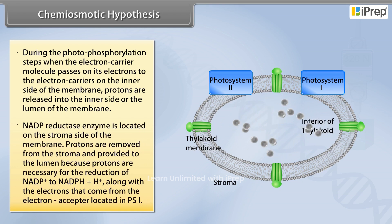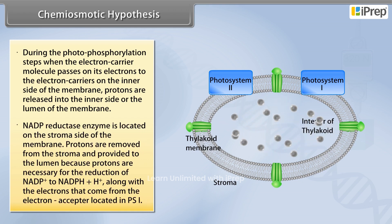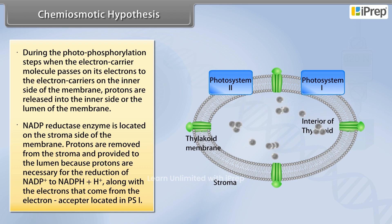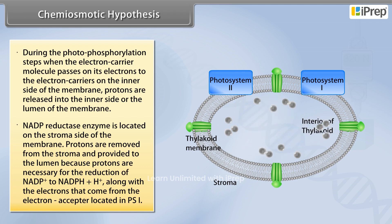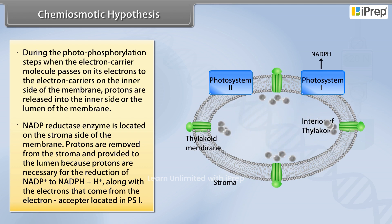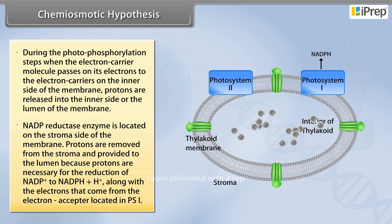NADP reductase enzyme is located on the stroma side of the membrane. Protons are removed from the stroma and provided to the lumen because protons are necessary for the reduction of NADP+ to NADPH + H+, along with the electrons that come from the electron acceptor located in PS1.